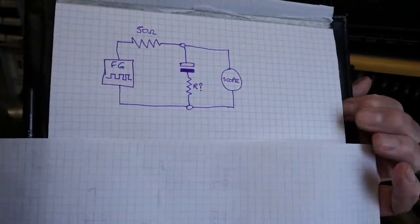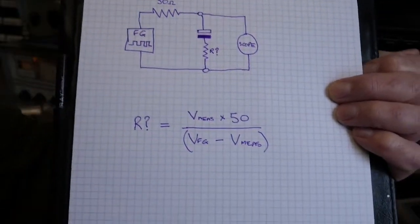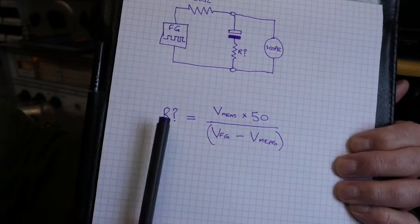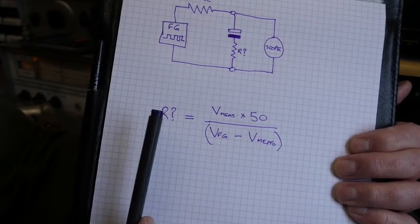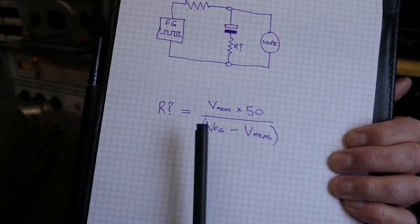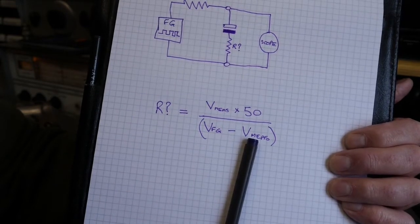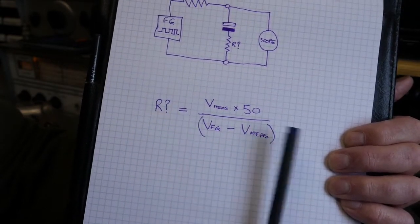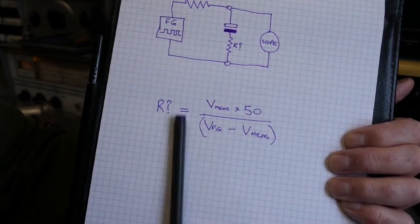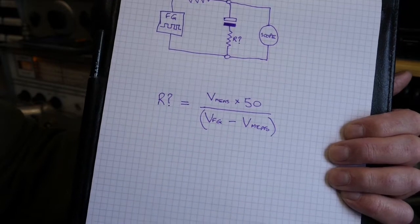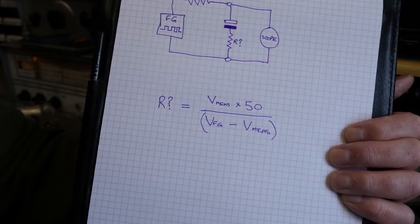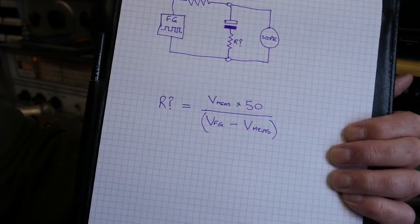The formula is fairly straightforward. The unknown resistance, or the ESR in this case, equals the voltage the function generator produces minus the measured voltage, then on the top of the equation the voltage measured times 50, that's the impedance. The output from that equation should give us the equivalent series resistance. Let's have a look at the scope and see what that looks like.